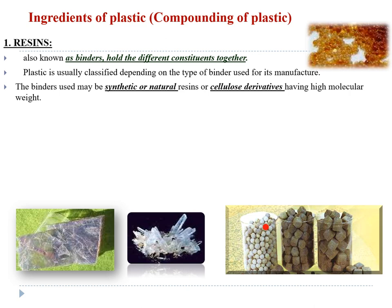We cannot just use the plastic made in the industry and directly make products. We want a better quality of plastic — a designed plastic for our particular use. So we have to add certain constituents to the plastic, like ingredients of plastic. This is called compounding of plastic. All these ingredients are added to improve the qualities of the plastic.